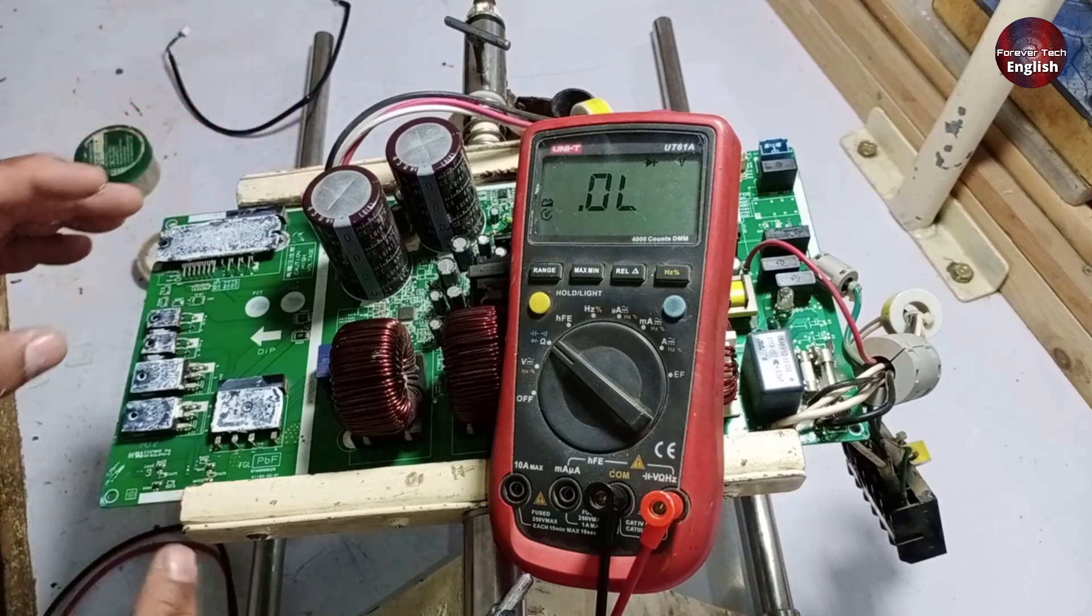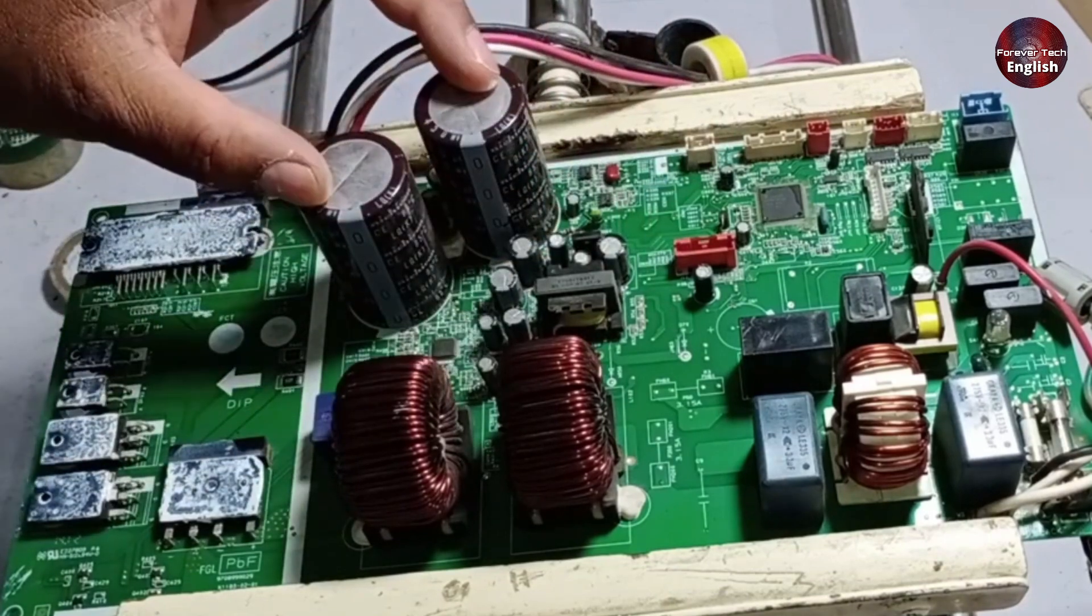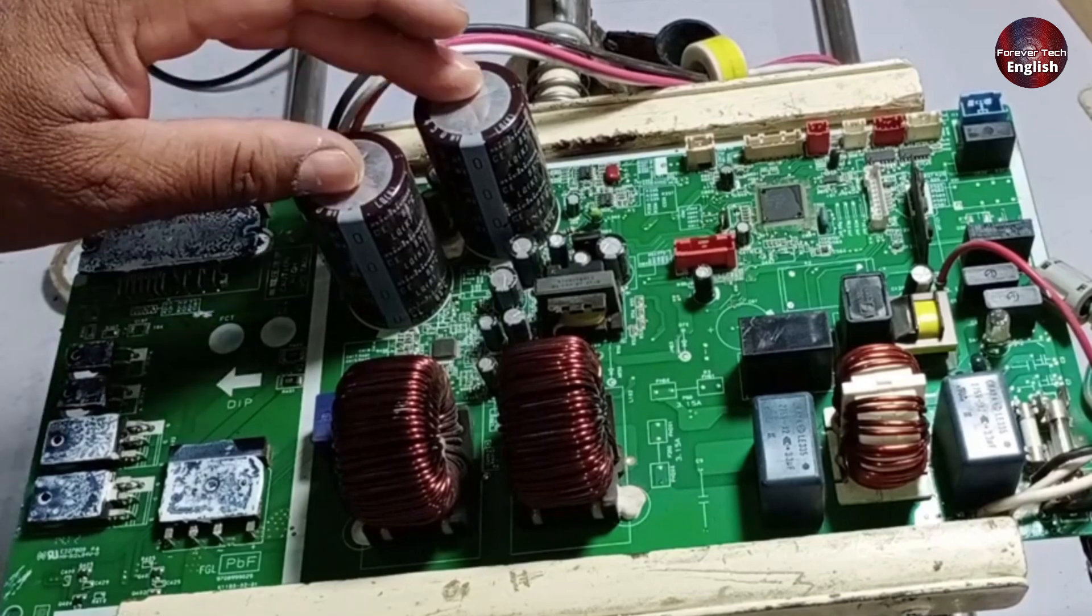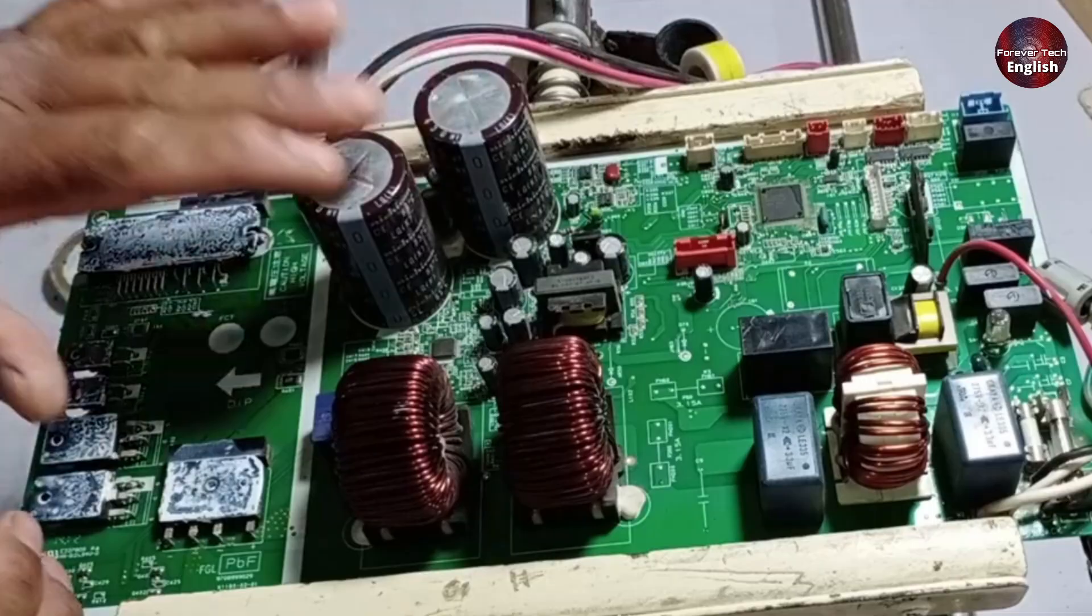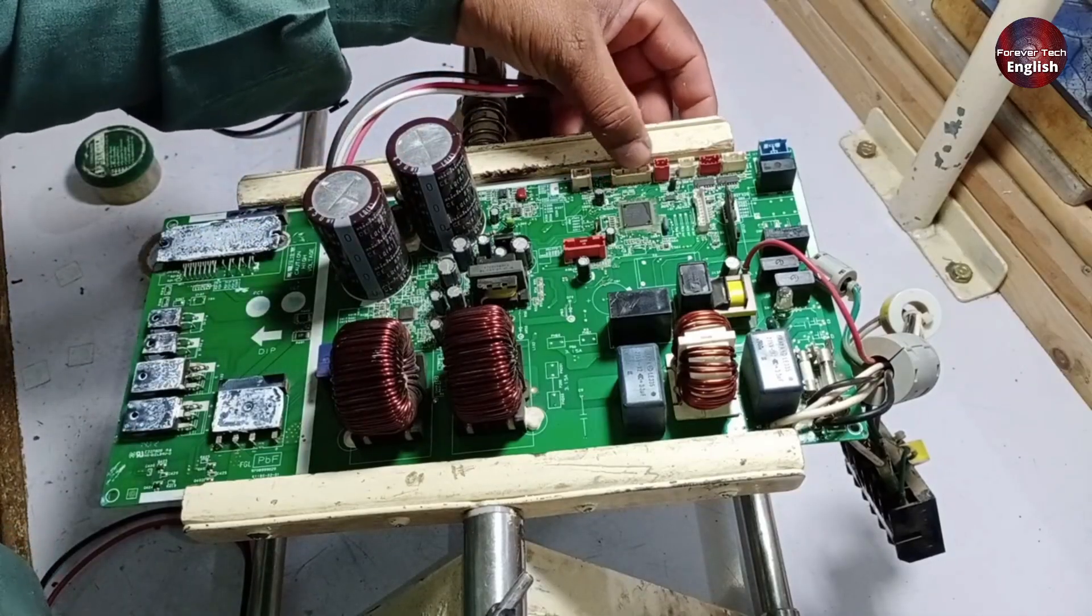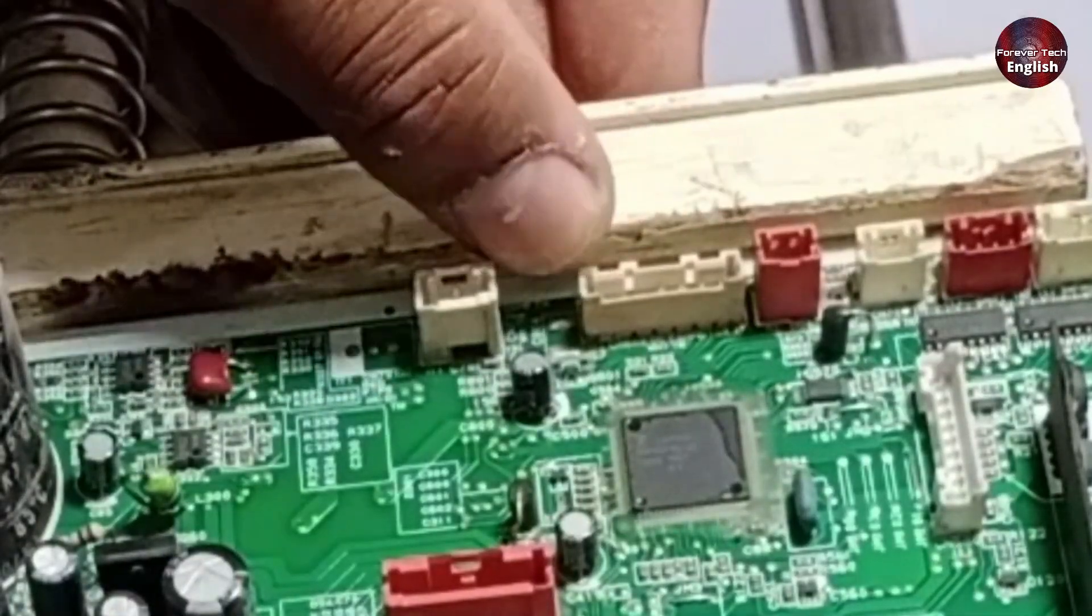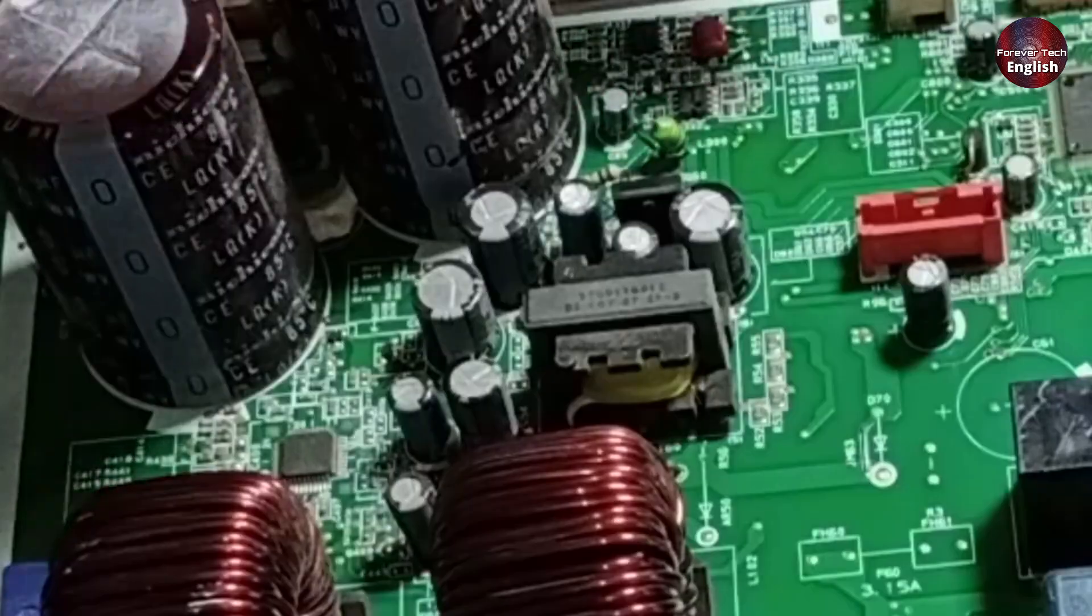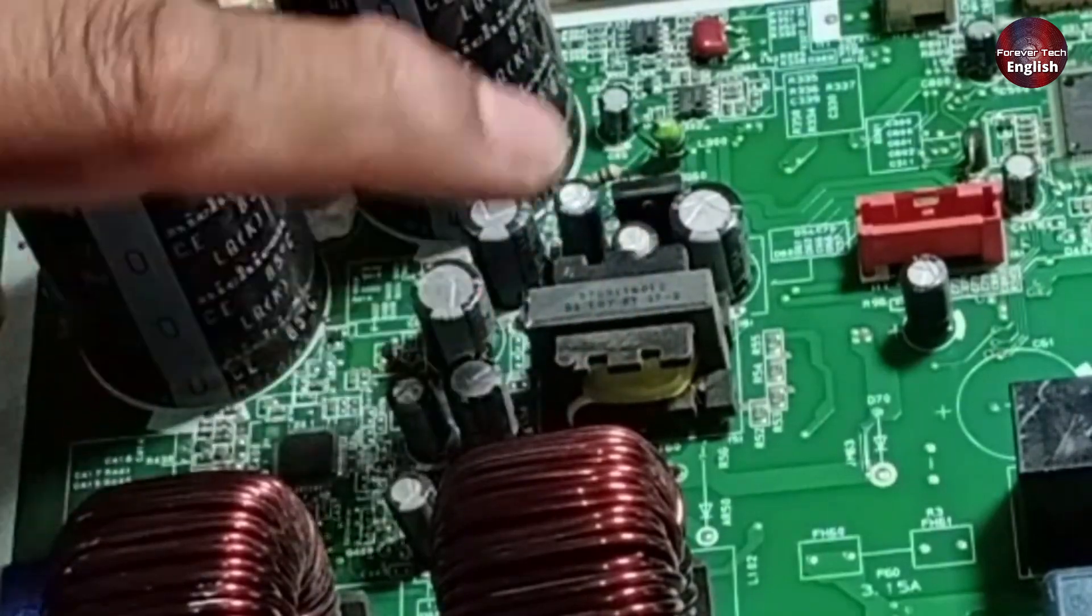Since everything seems to be in order, we will now check the SMPS, switched mode power supply. Apart from this, there are capacitors, and if any of them are short-circuited, that could also cause issues. Physically, there is no visible damage to the capacitors. So where is the problem? Since the high side is fine, when I check the position of the fan's connector, I notice some damage here. This means there might be an issue in the fan's circuit. And since the fan's circuit is directly connected to the SMPS, it could indicate a fault in the SMPS as well.